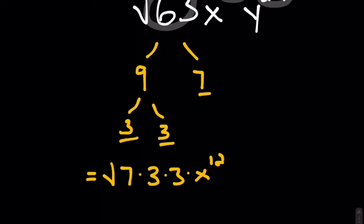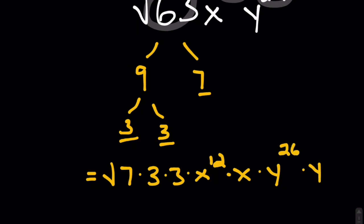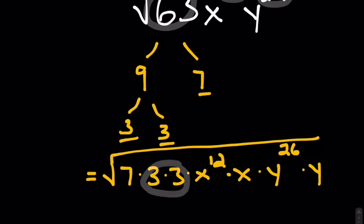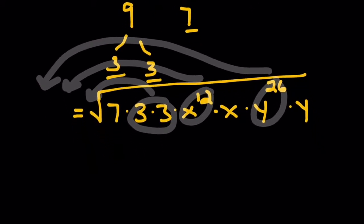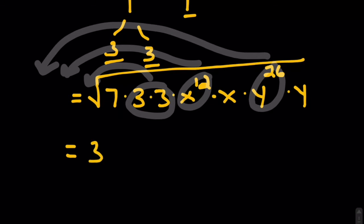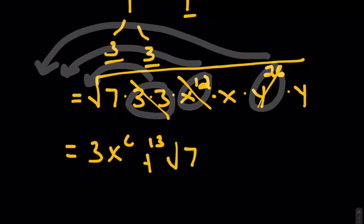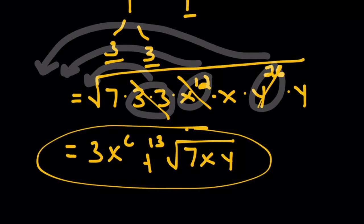Then we subtract one from each of our powers: we'll have x to the twelfth times x, and y to the twenty-sixth times y. We have a pair of threes — put those outside. We have a twelfth and a twenty-sixth to put outside, and we cut those in half. Rewriting: three for the pair of threes — cross those out — x to the sixth (half of twelve), y to the thirteenth (half of twenty-sixth). What's left in the radical? Seven, x, and y. Final answer: three x to the sixth, y to the thirteenth times the square root of seven xy.